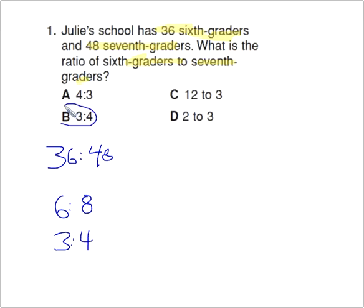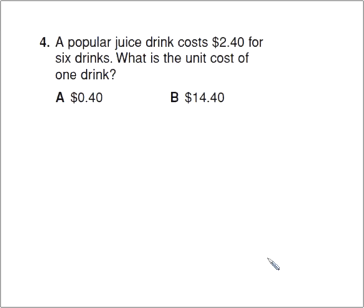So there's a 3 to 4 ratio between the sixth graders and the seventh graders at Julie's school. So the answer would be B. Ideally, you would have come up with 12 as being the greatest common factor. 36 divided by 12 is 3. 48 divided by 12 is 4. You would have got the same thing. But it's okay if you don't always come up with the greatest common factor.